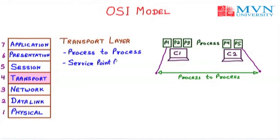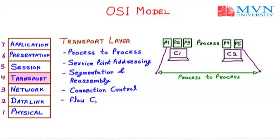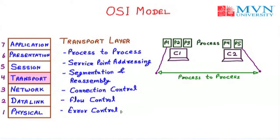The next function of the transport layer is service point addressing, which provides particular services via the transport layer. Then we have segmentation and reassembly — the transport layer divides data into proper segments, and when sent to the destination, reassembles them. Next is connection control, which manages the source-to-destination connection made by an administrator or computer. The transport layer also performs flow control to manage the flow of data being transferred, and error control to handle any errors occurring during data transmission.